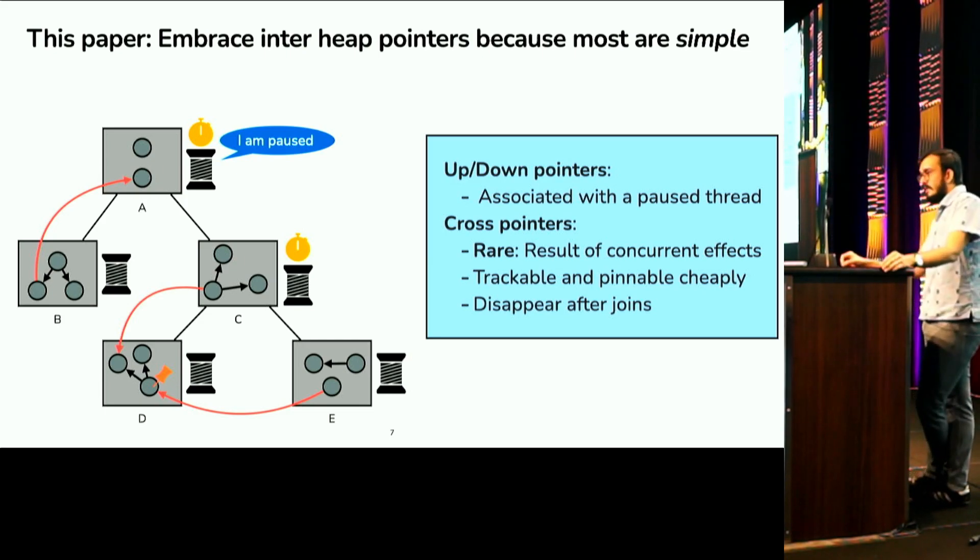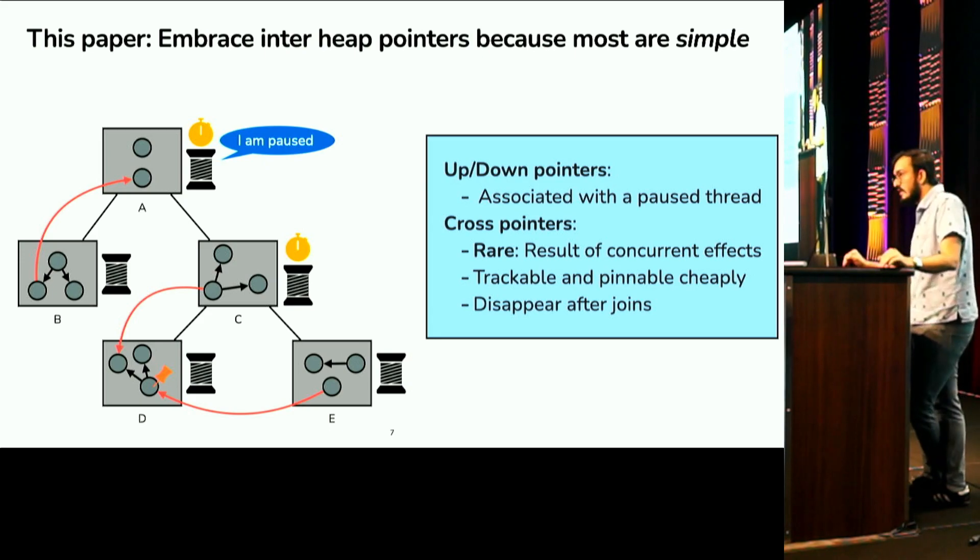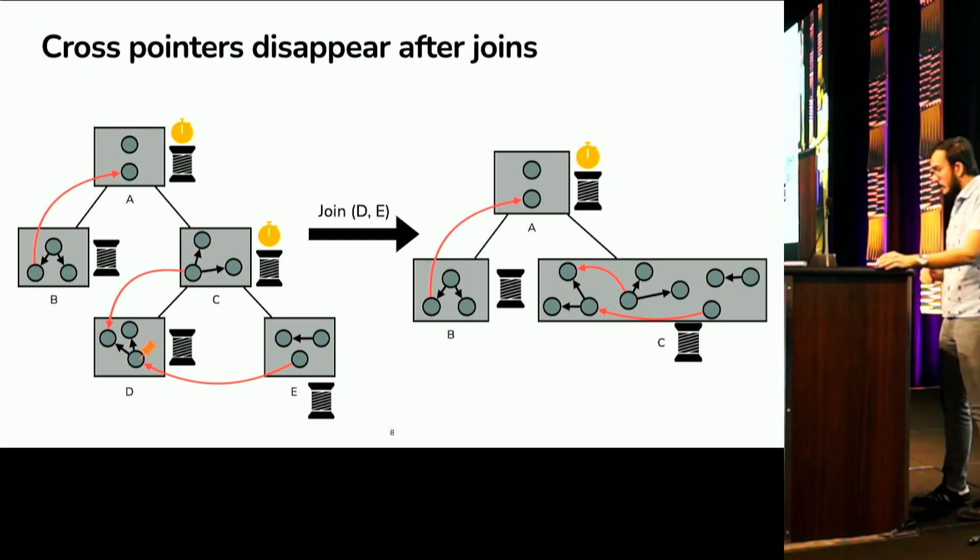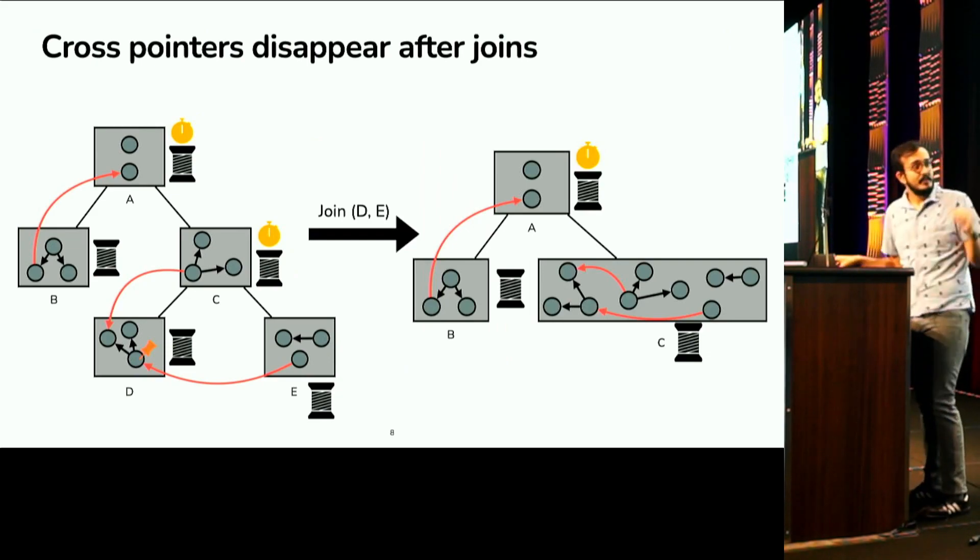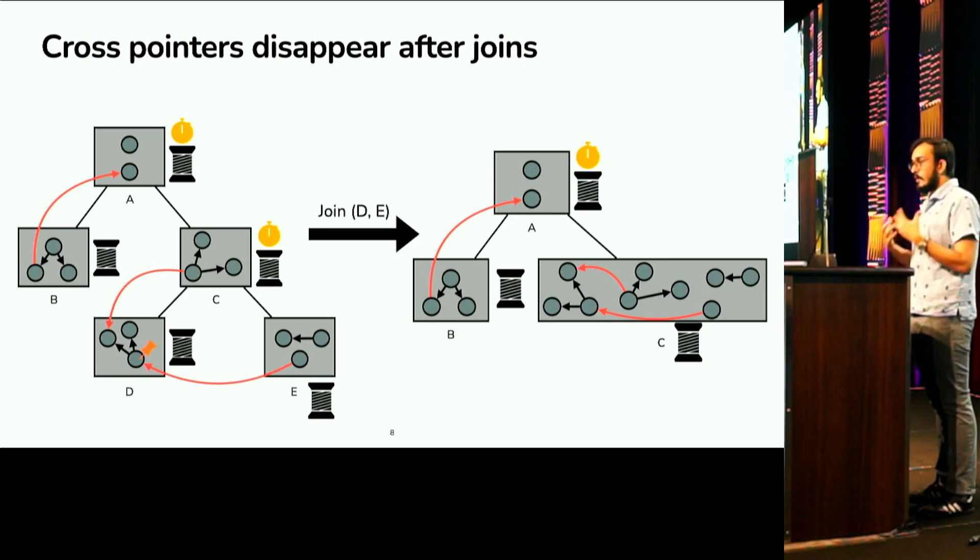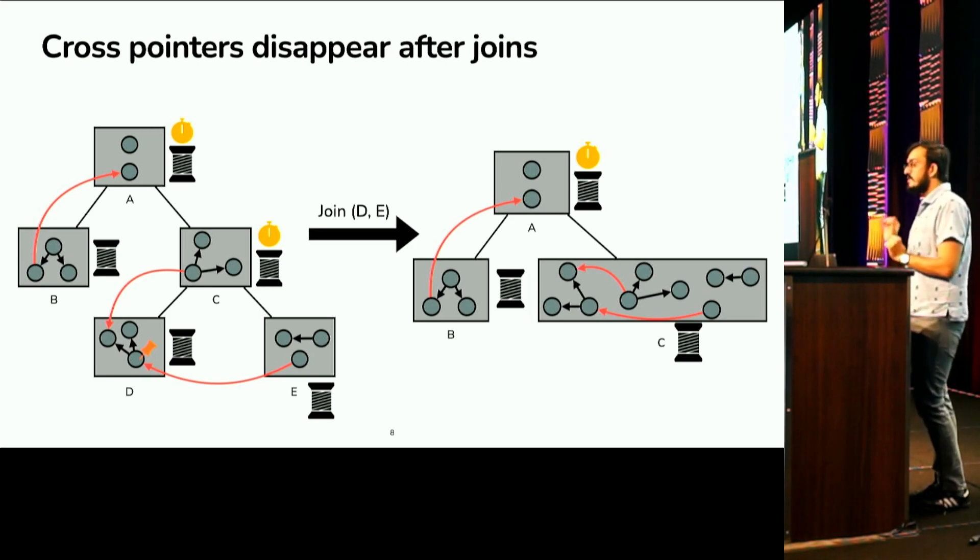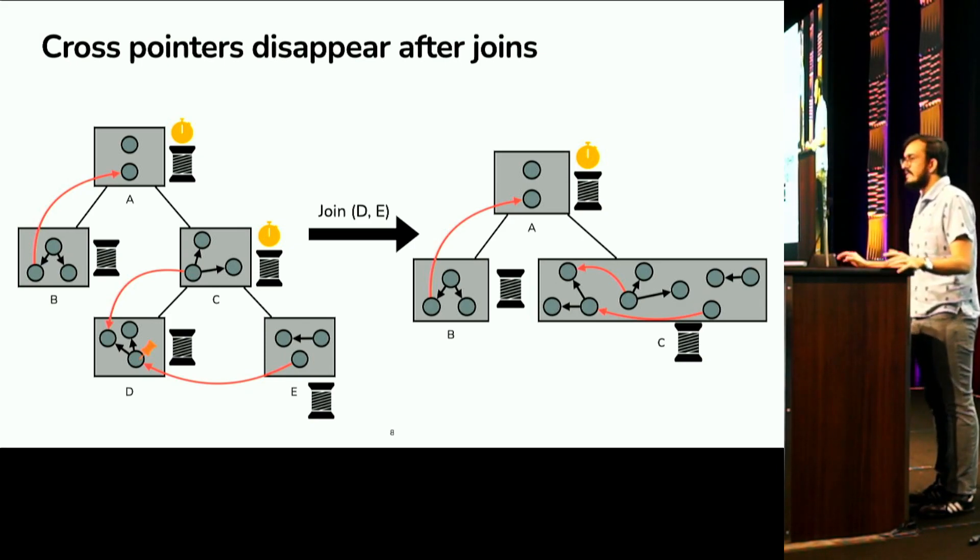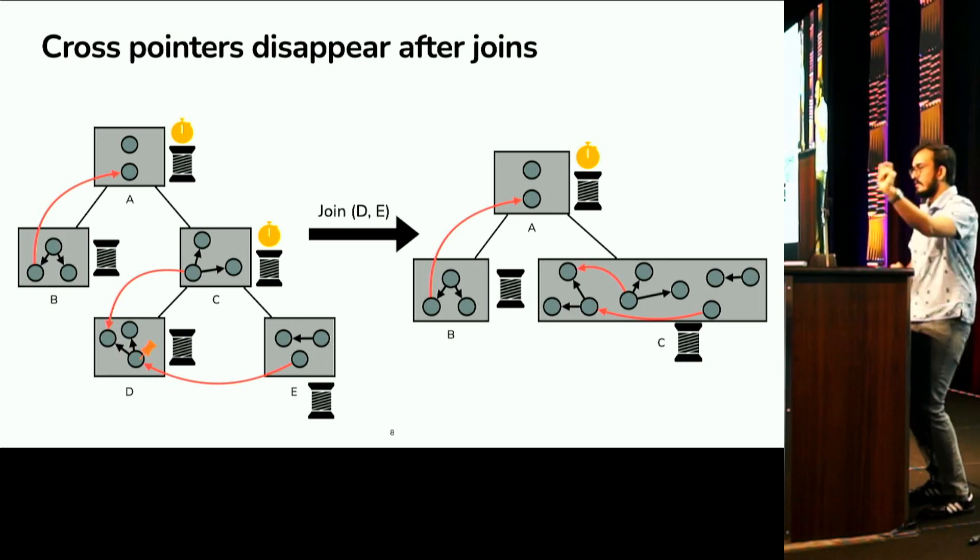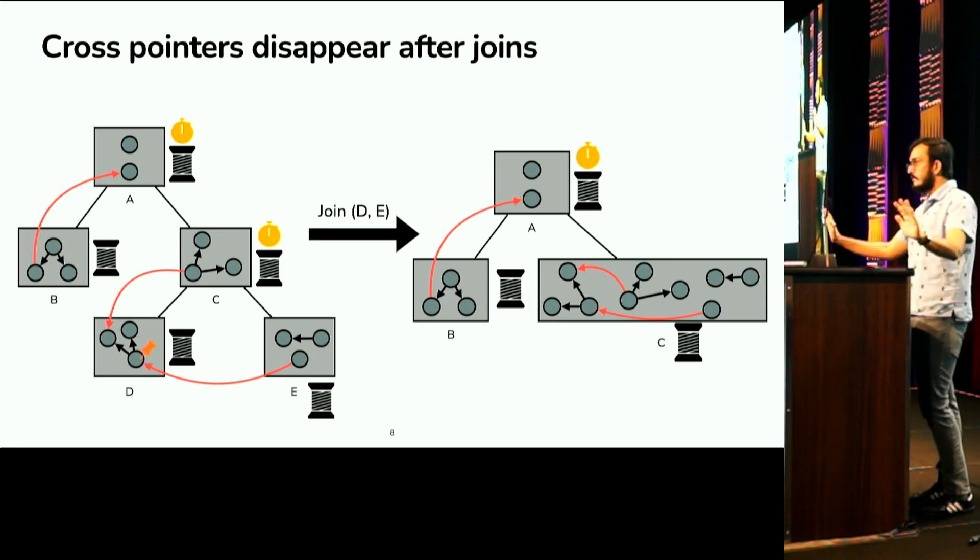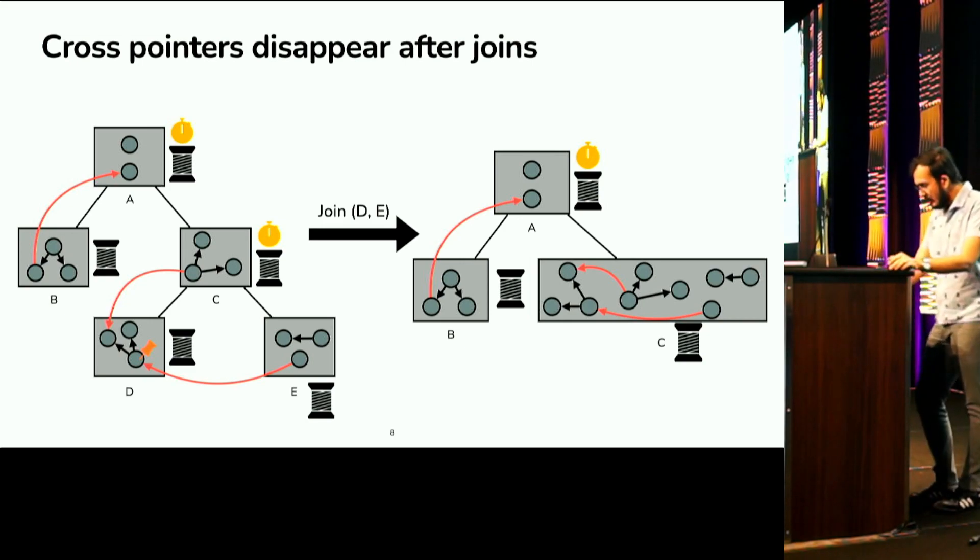Another fascinating thing about these cross pointers is that they disappear after joins. So, if you focus your attention on the cross pointer from heap E to heap D, when threads D and E join, it's going to disappear. Let me show you how. There's a lot going on in the slides. All I want you to focus on is the cross pointer from E to D. So, suppose that threads D and E join. What we do in our system is we track that join and we merge the heaps of D and E with its parent C. So, now the cross pointer has just basically disappeared. And this is the idea. The idea is that you pay a one-time cost for pinning the target of the cross pointer. And then basically when threads join, all of the overhead of having cross pointers just disappears.